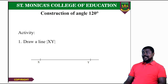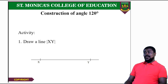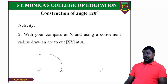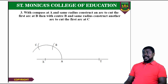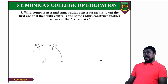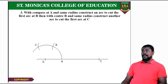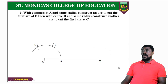We move on to construction of angle 120 degrees. Draw a line XY of about 8 or 10 centimeters. With your compass at X and a convenient radius, draw an arc to cut XY at A. With compass at A and the same radius, construct an arc to cut the first arc at B. Then with center B and same radius, construct another arc to cut the first arc at C. With a straight edge, draw a line from X to pass through C. The angle drawn is 120 degrees.